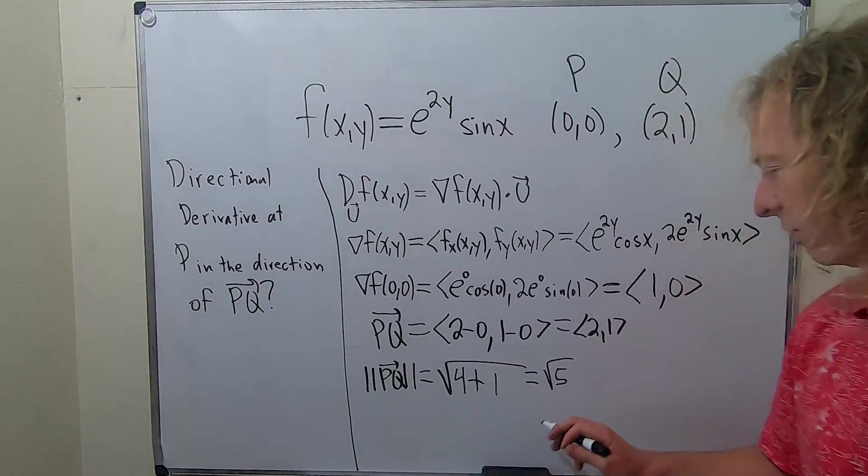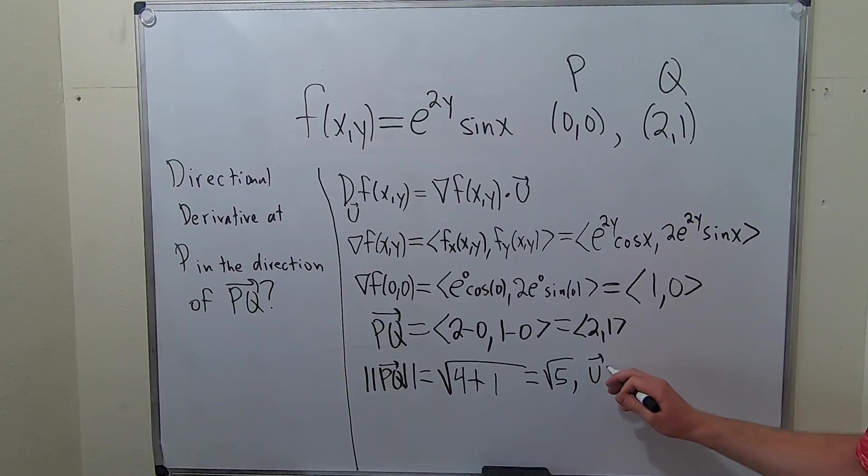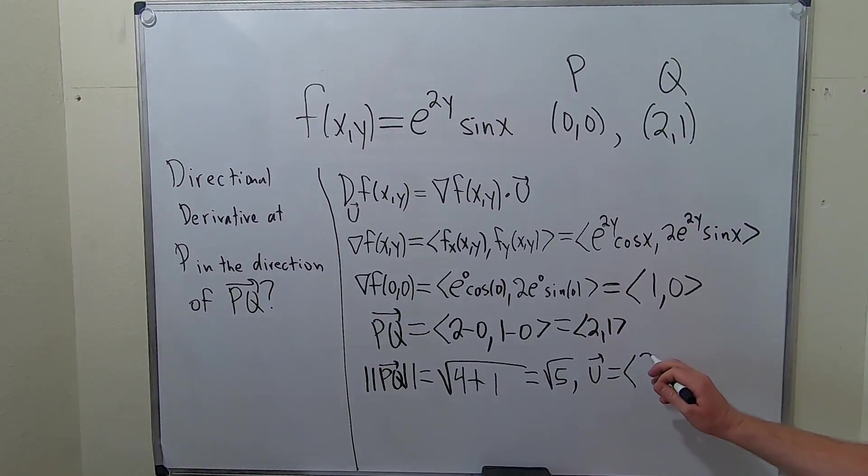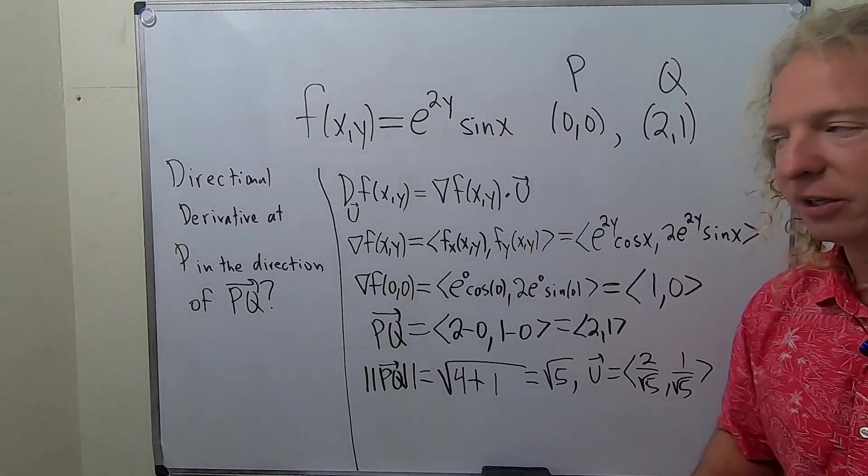Now, we can form our unit vector. I'll write it here. So, U. It's going to be this divided by the magnitude. So, I'm going to write it like this: 2 over root 5, comma, 1 over root 5. So, this will be our unit vector. We're in a good place now because now we can fill in the answers.